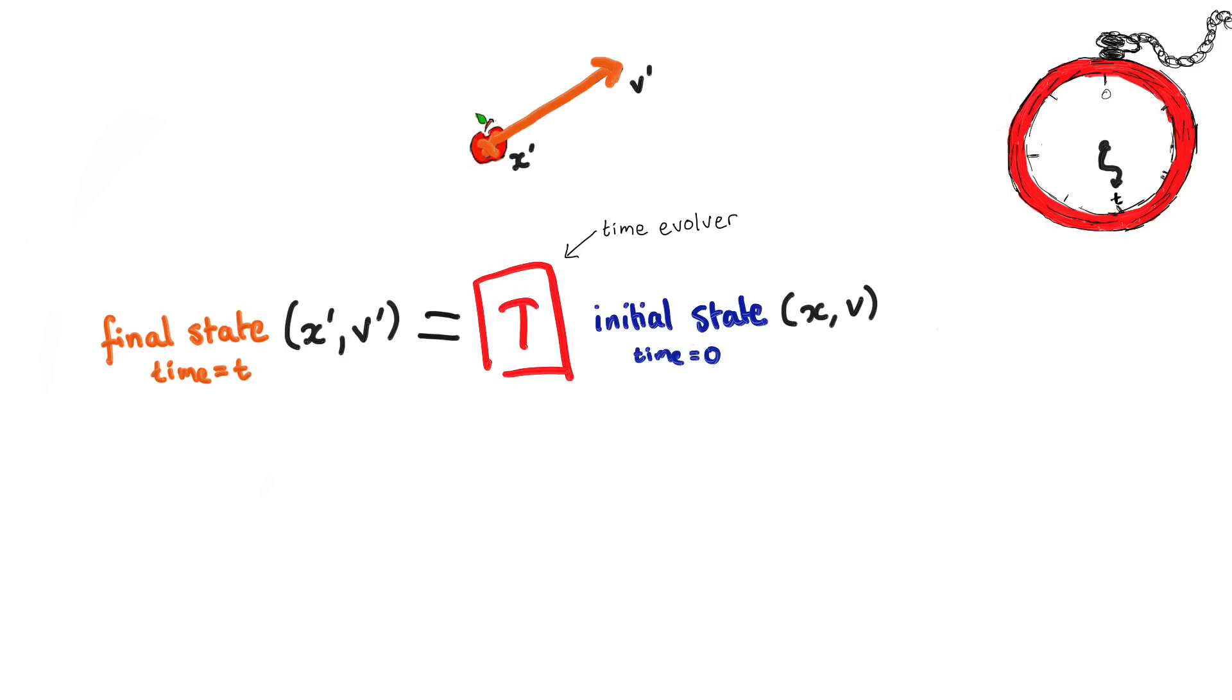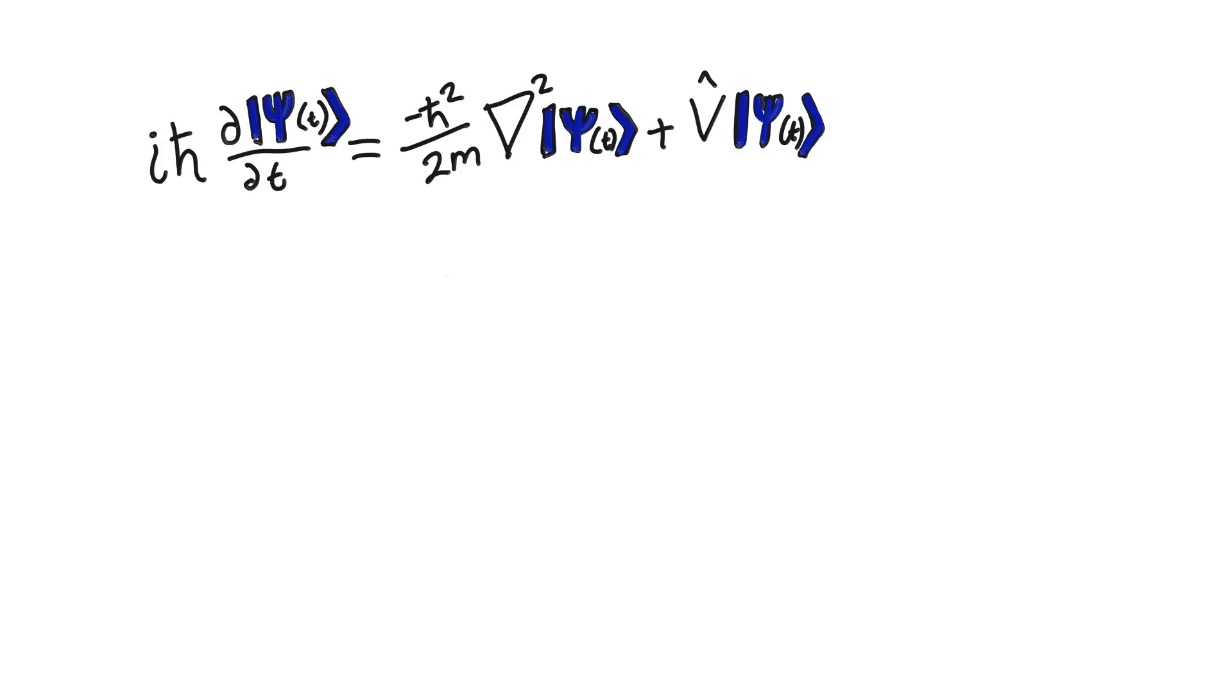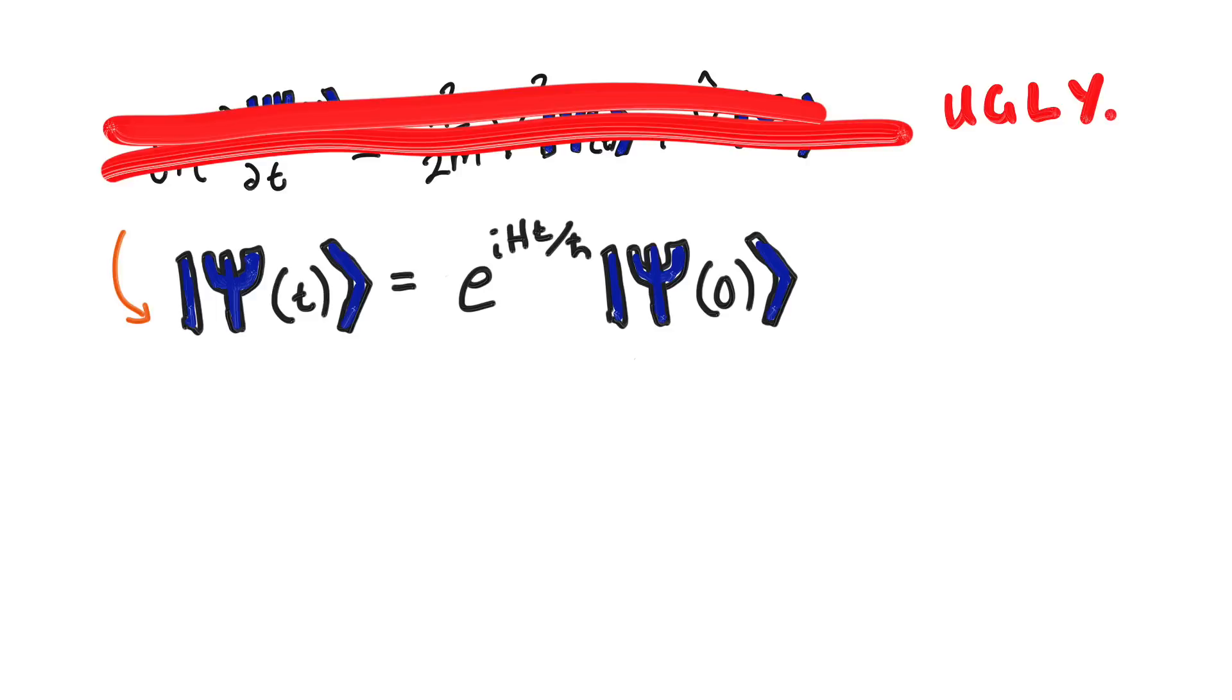What we want for quantum mechanics is something that will do the same, tell us what the future state of the system is. And that's what the Schrödinger equation is for. In fact, there is a much nicer way to write this equation that puts it exactly into this form.